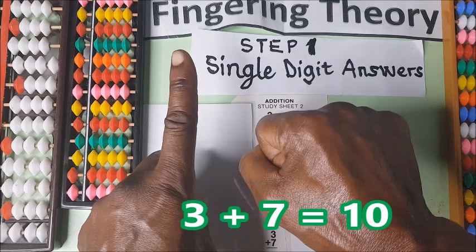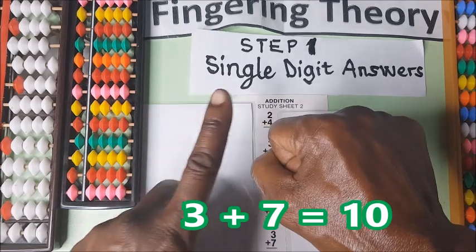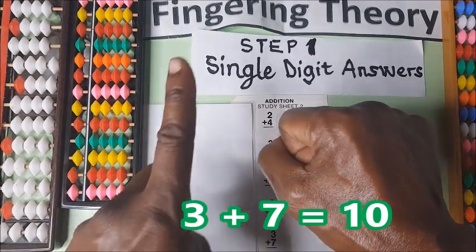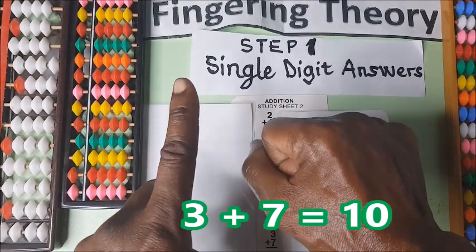left. That is 10. The left hand fingers, they are 10. So we have 10. So 3 plus 7 is 10.